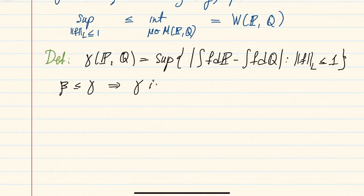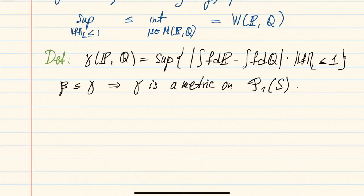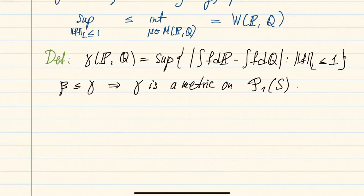This implies that gamma is a metric on the set of probability measures P1, because it obviously satisfies the triangle inequality, is symmetric in p and q, and if gamma is zero then beta is also zero so p must equal q. We note that we limit ourselves to P1 because a Lipschitz function that is not bounded can grow linearly with distance, so for these integrals to be defined we restrict to this set.